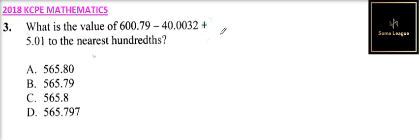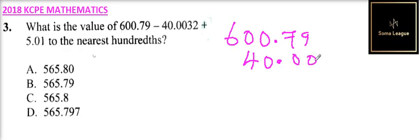You can write this in column form. We have 600.79, and the other number is 40, so we put it here, point, we have 0, 0, and we have 3 and 2. We first of all subtract that from 600.